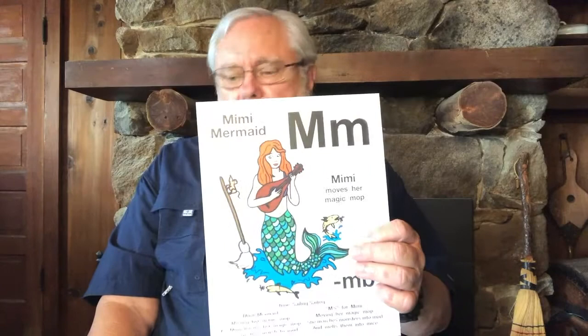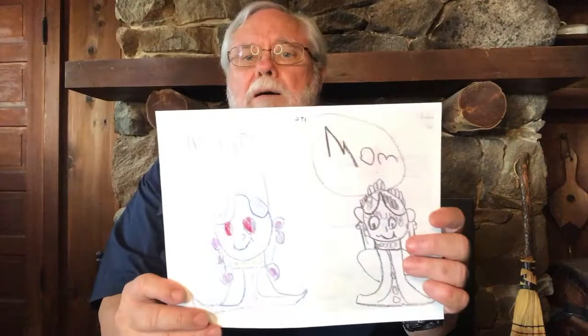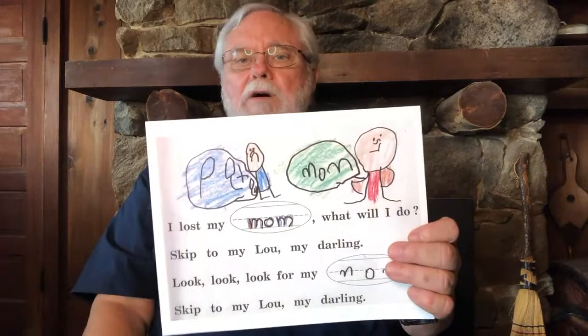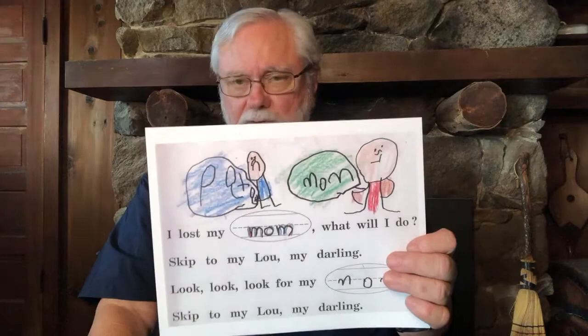In our next lesson, we'll learn short O for Ollie Ostrich. Kids will draw a picture of a pop and put 'pop' into 'I Caught a Fish Alive' — one, two, three, four, five, I caught a pop alive. Then we introduce M — Mimi Mermaid moving her magic mop — and children drew pictures of a mom. We put it into a complete song: 'Lost my mom, what'll I do?' making it a hide-and-seek where mom is hiding and the child goes to find her. Every time a new sound is added, that sound is combined with previous sounds to draw, and that drawing is added to a pattern song that we can track, locate words in, and gesture.